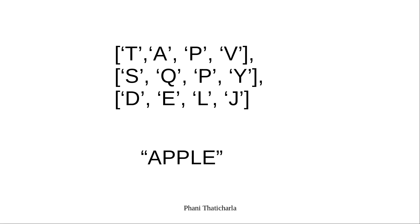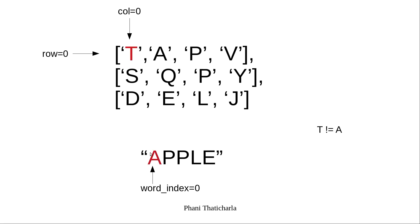So let's do that fun part now. Let's start with the first letter in the board, which is row 0 and column 0, and compare it with the first letter in the word — I'll call it word index. Now is letter T equal to A? No. So what we'll do is we'll try to explore the other elements in the board.